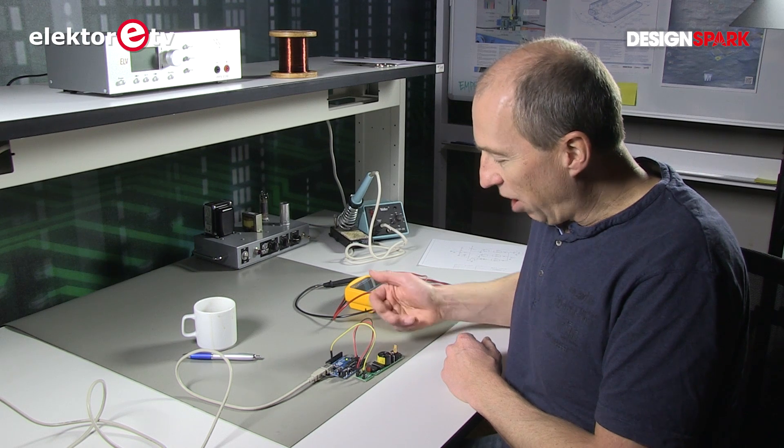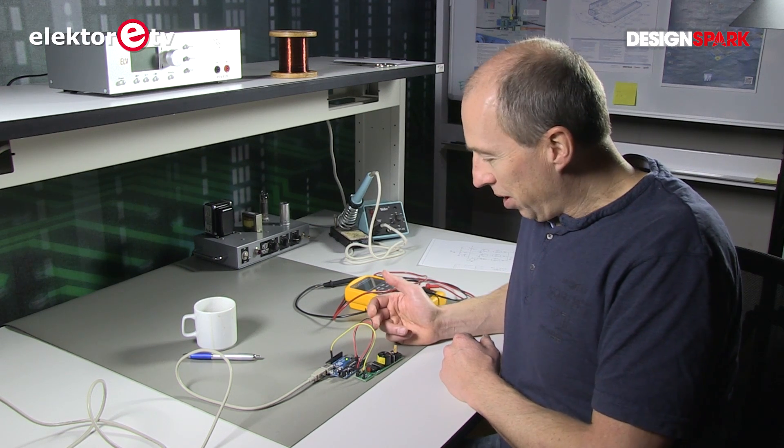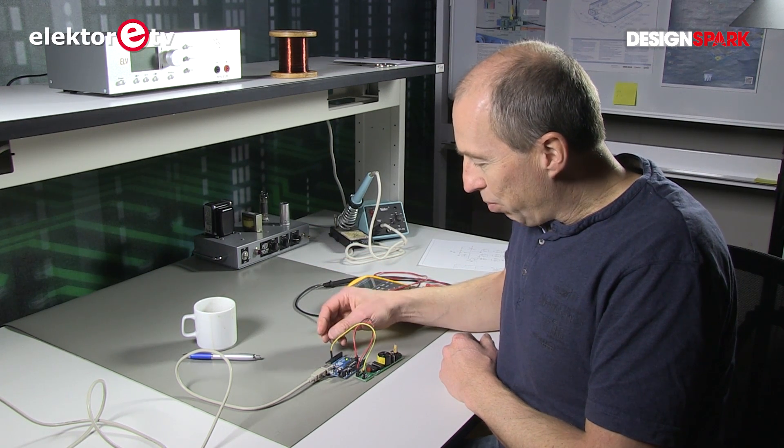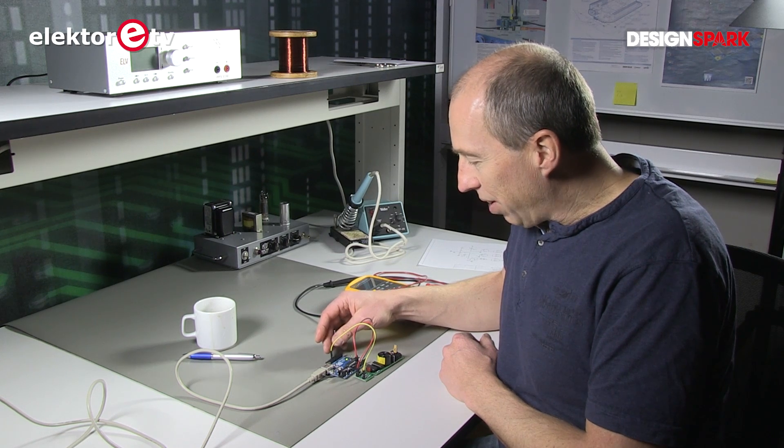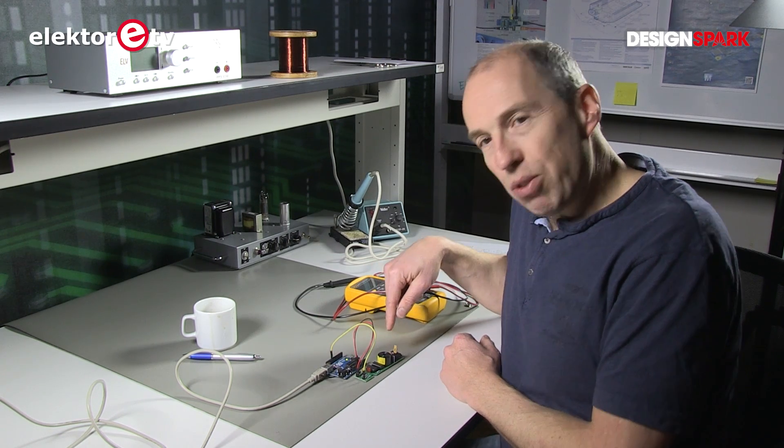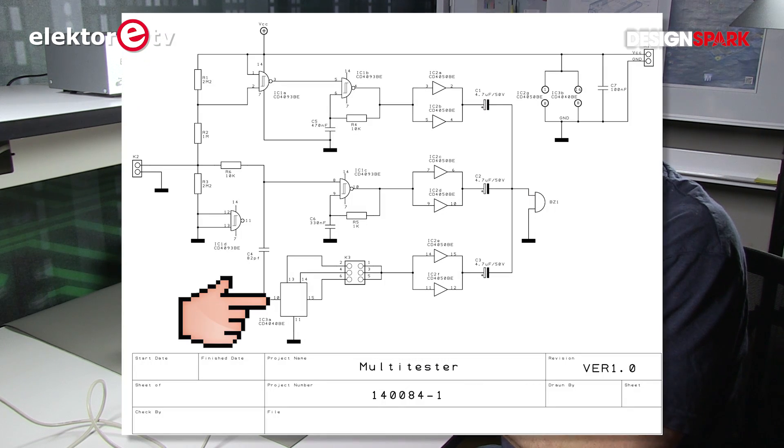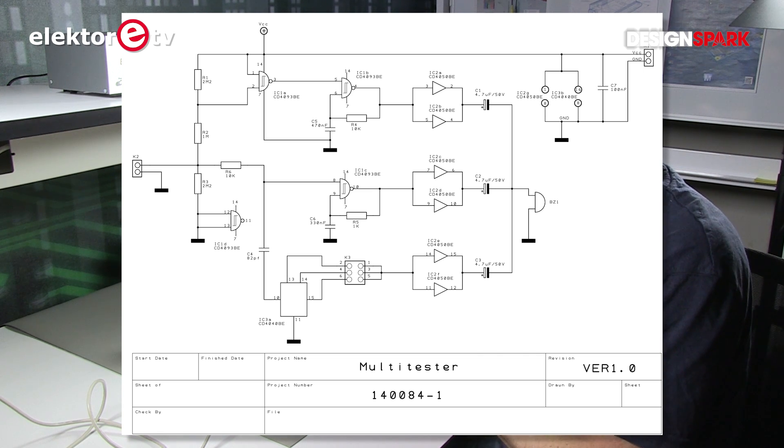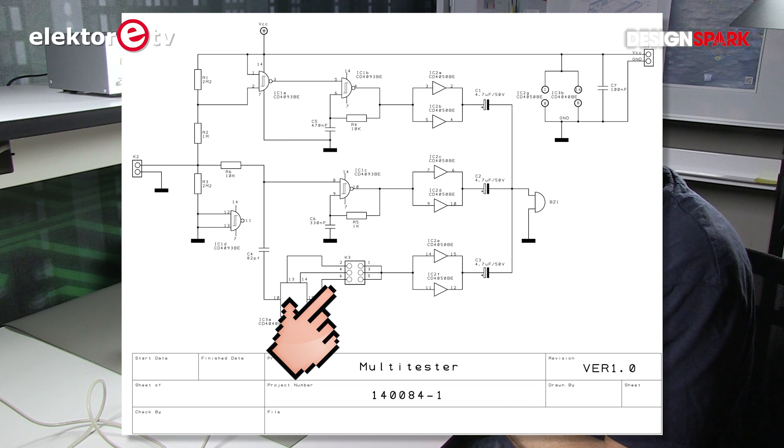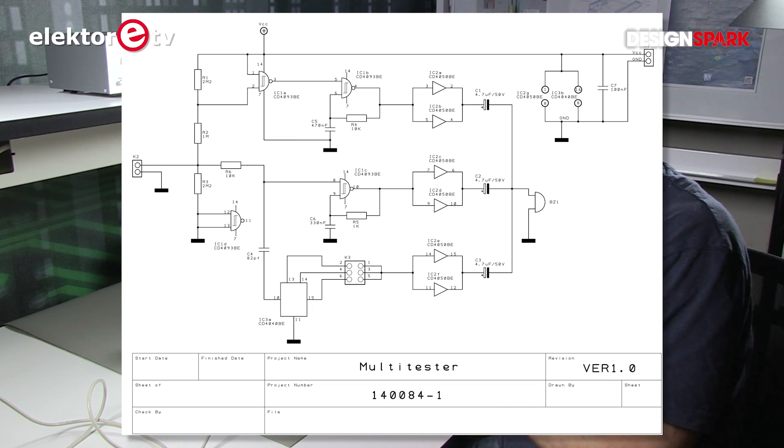And as you can hear, it's alternating between high and low, showing you that there is a frequency. This frequency that you hear is not the frequency that is here. It is divided by a divider on the board. So you can measure frequencies up to, I think, two megahertz and use this switch option here to bring the audible frequency into the range of your ears.